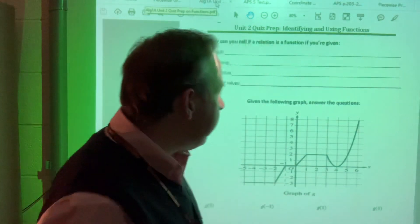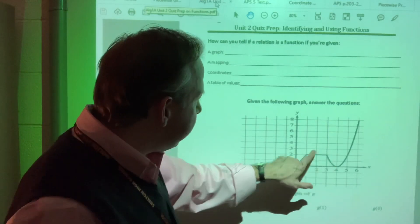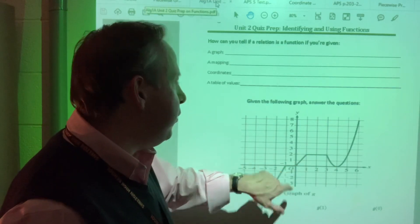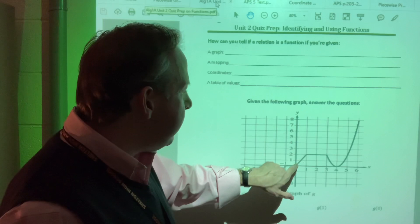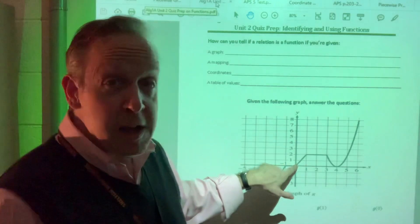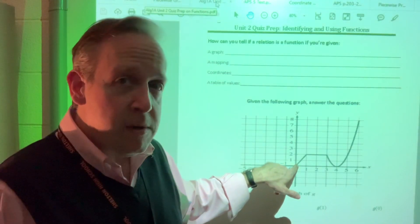And what is g of zero? Well, you can see that this is crossing through the origin. So at an x value of zero, it's also a y value of zero. So the answer is zero.